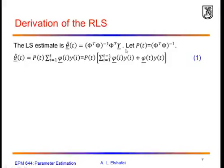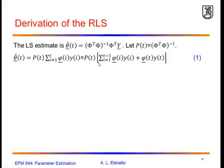I can rewrite the parameter estimate as P times phi-transpose y, substituting phi-transpose phi inverse by P. I will rewrite the product phi-transpose y as a summation of columns of phi-transpose times the corresponding elements in y. This summation from i equals 1 to t can be written as a summation from i equals 1 to t minus 1, plus a last term phi-transpose of t times y of t.